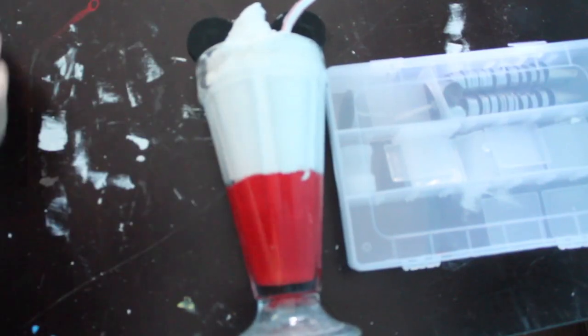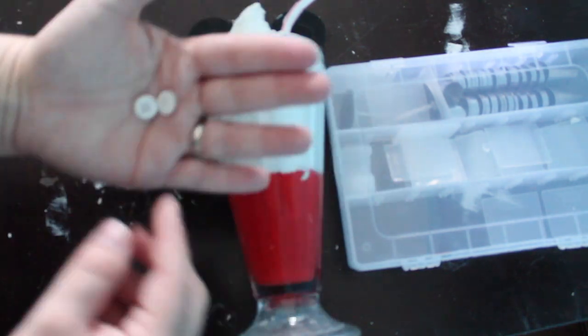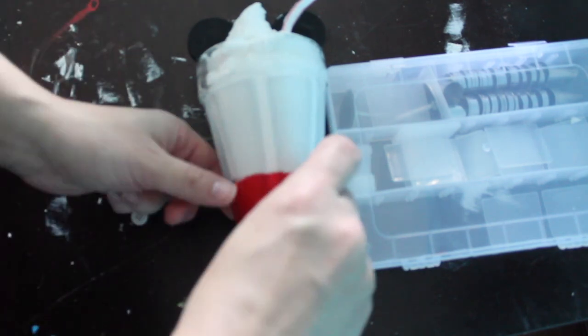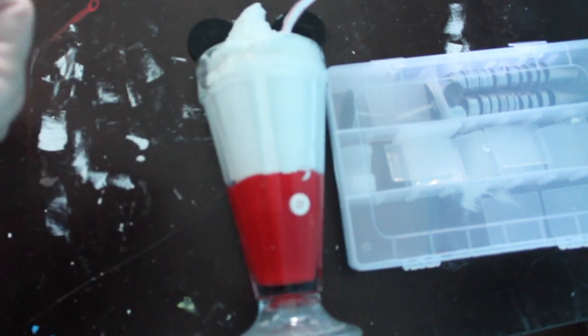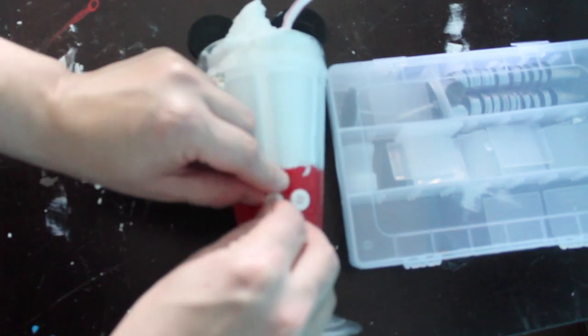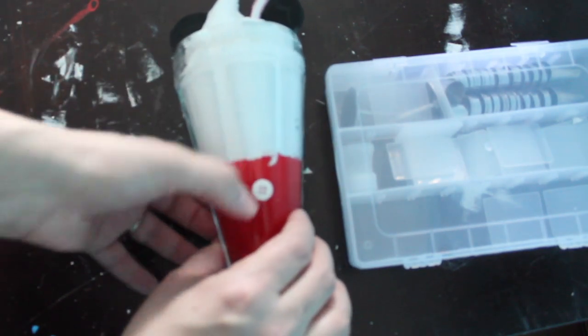Then the very last step is gluing on the buttons. I'm just using hot glue. If you're for some reason worried about the hold of the hot glue, you could always do hot glue and e6000, but I had no problems with just using hot glue. And that pretty much does it for this tutorial guys.